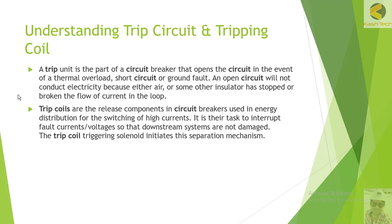A circuit breaker has a trip unit, also called an interrupter — the name coming from 'interrupt.' This interrupter unit has two contacts: one fixed and one moving. When it receives a command from the relay, it opens. The relay senses quantities such as over-voltage, under-voltage, over-current, or under-current, and if the sensed value exceeds or falls below the set value, it issues a trip command and the interrupter opens.